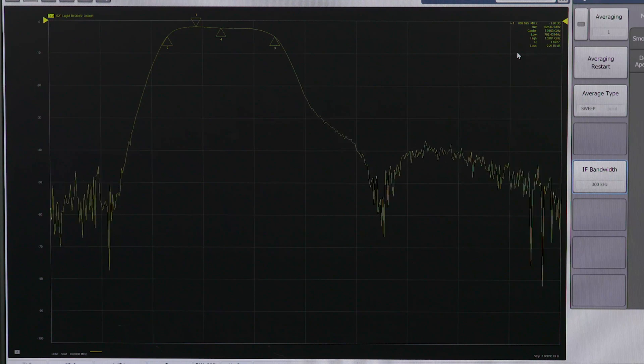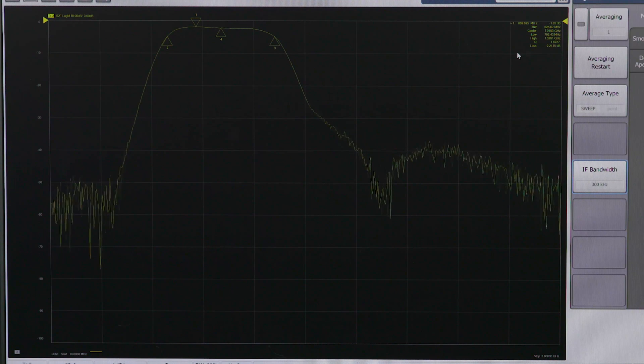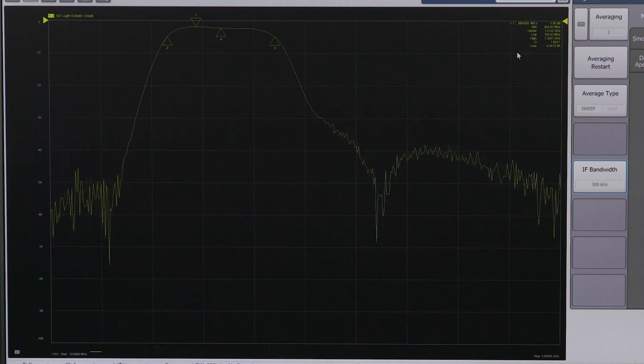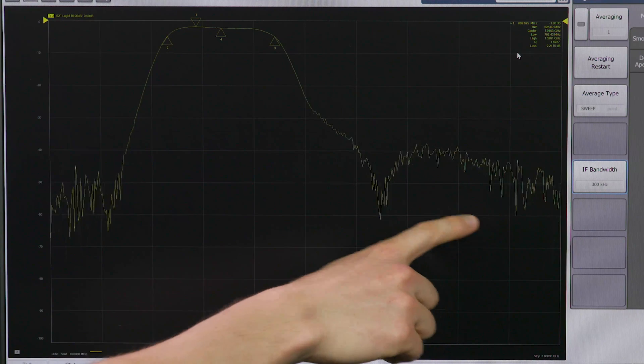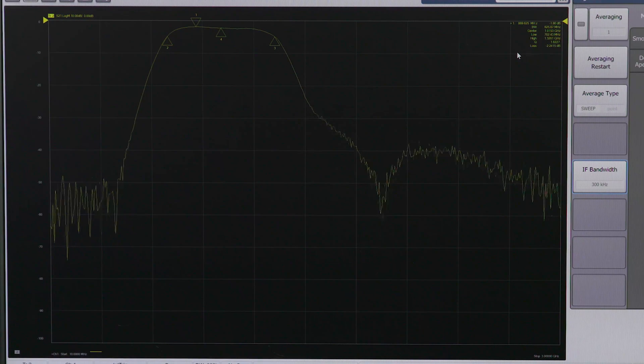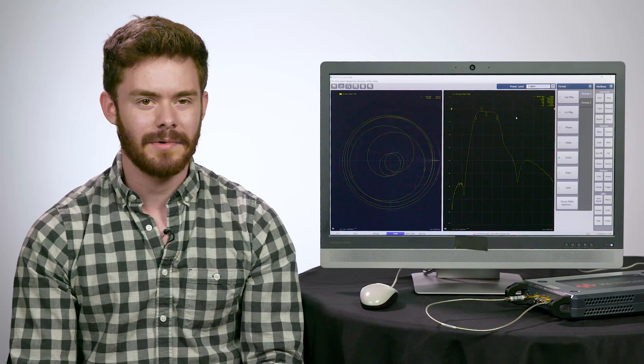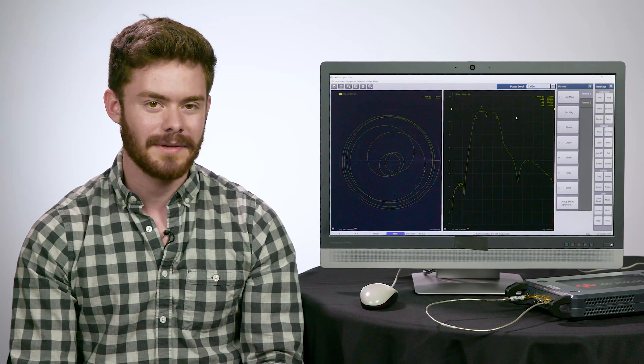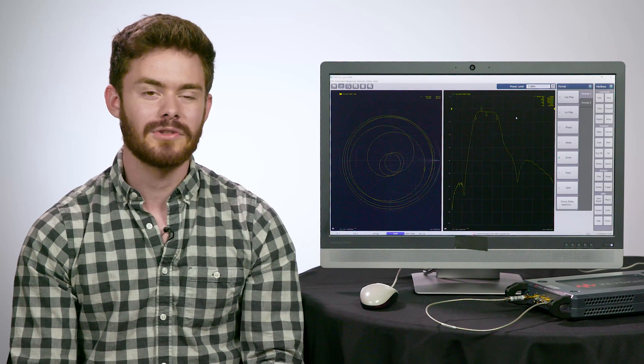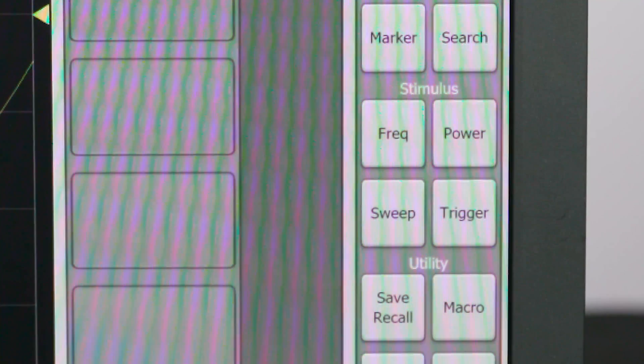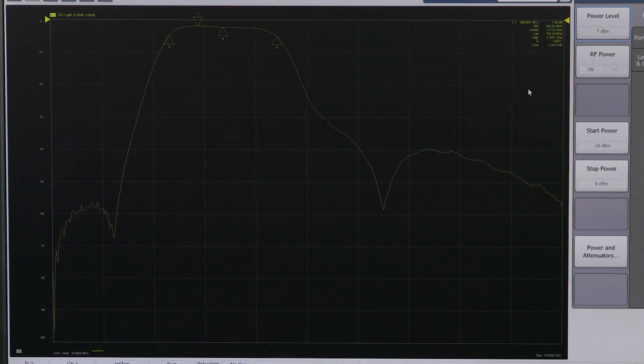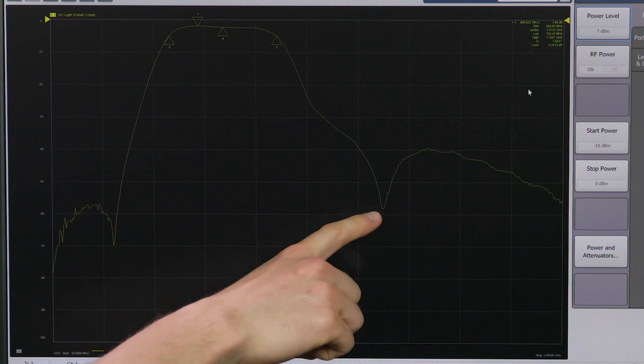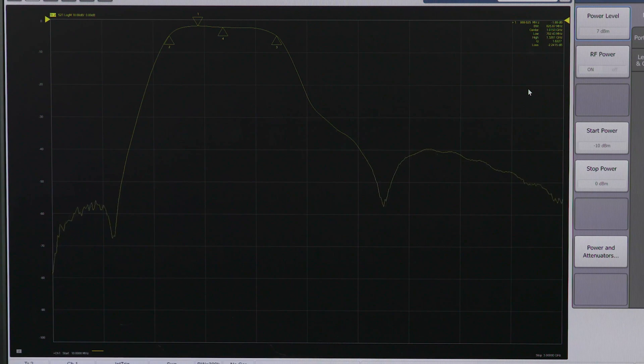However, the tradeoff is the higher the IF bandwidth is set, the more random noise will be introduced to the measurement. You can see that increased noise here in the rejection bands below 350 MHz or above 2 GHz. To improve this signal-to-noise ratio to make more accurate measurements, we can increase the instrument's source power. I'll select Power and Power Level and enter 7 dBm. You can instantly see that the trace noise in the rejection bands has improved while maintaining that high measurement speed with 300 kHz IF bandwidth.